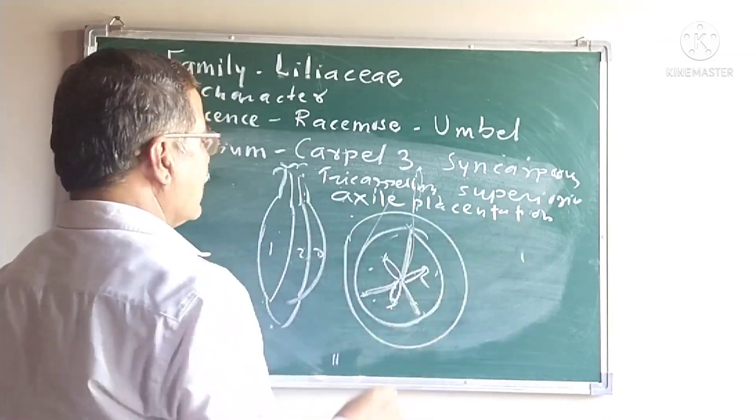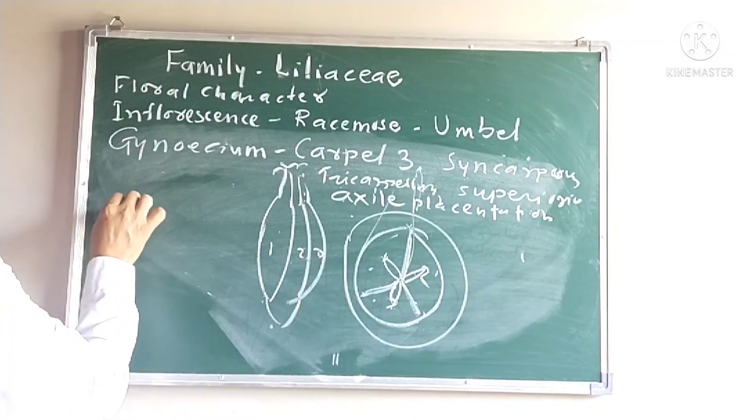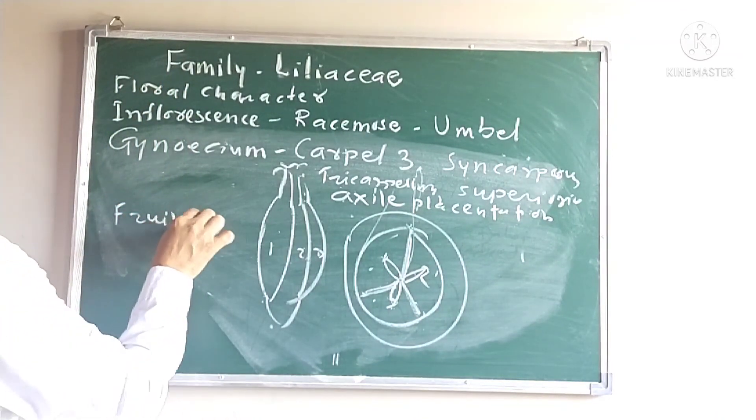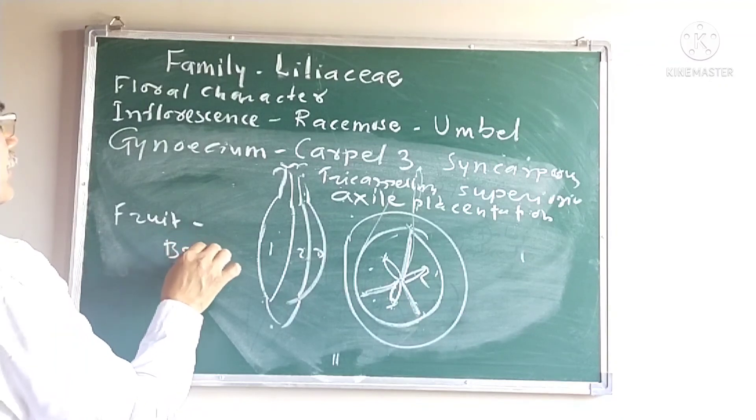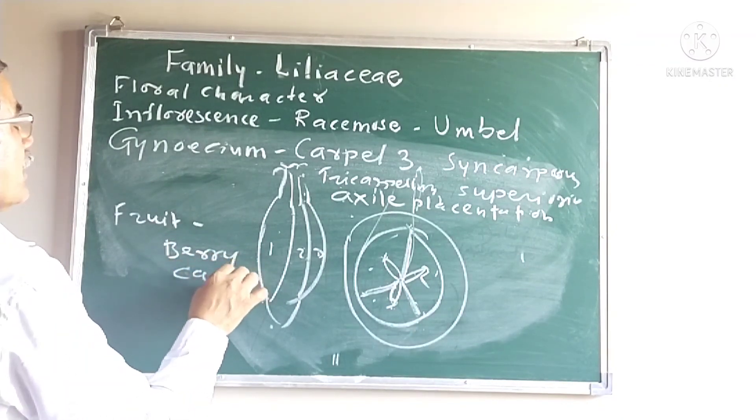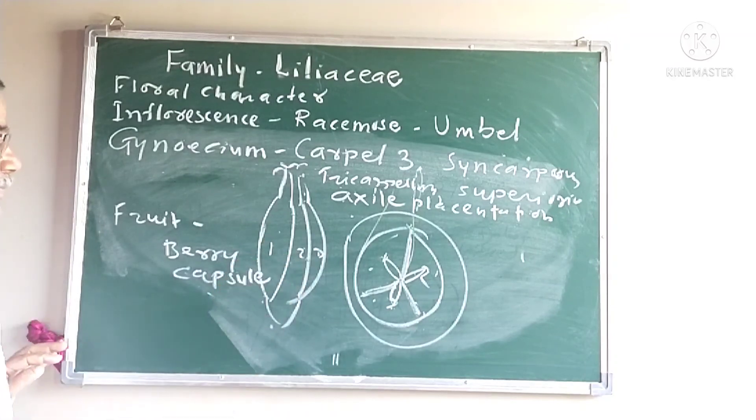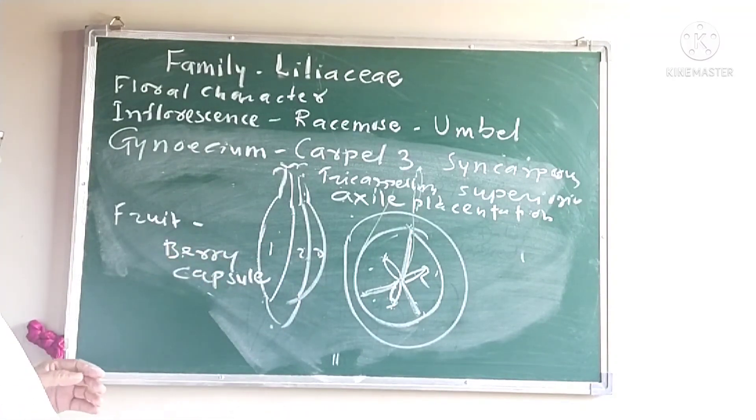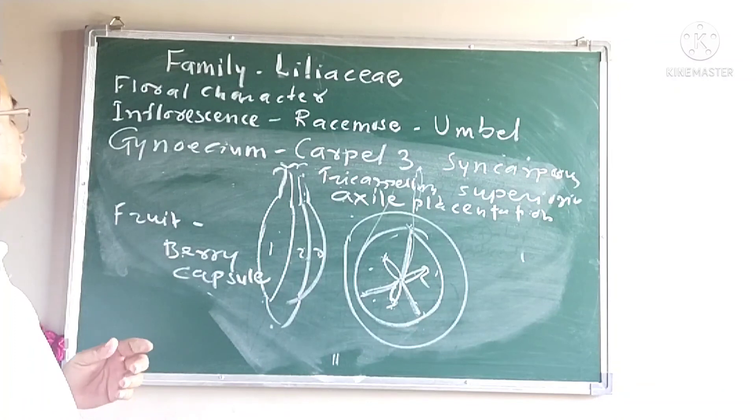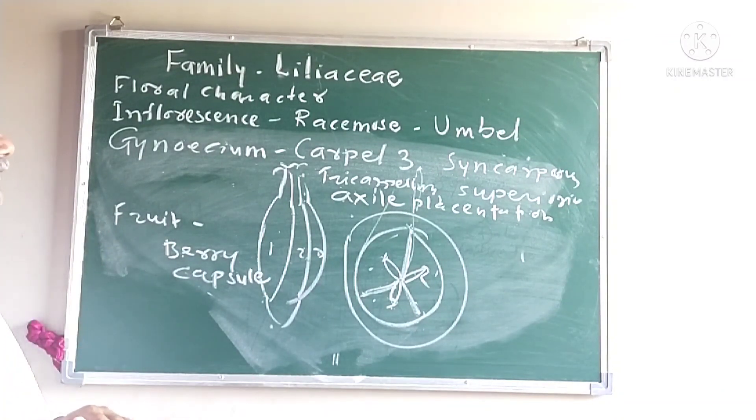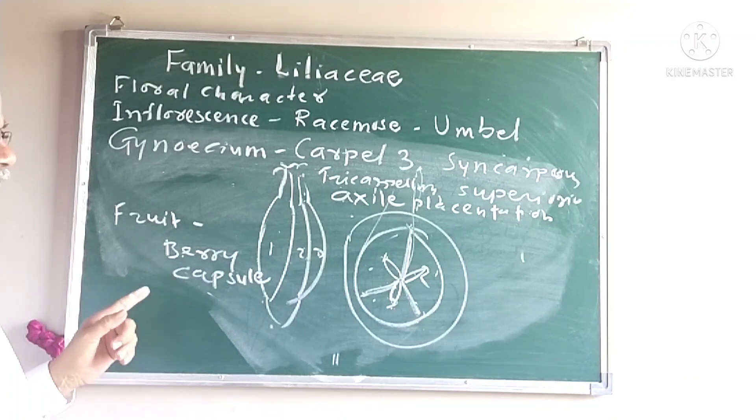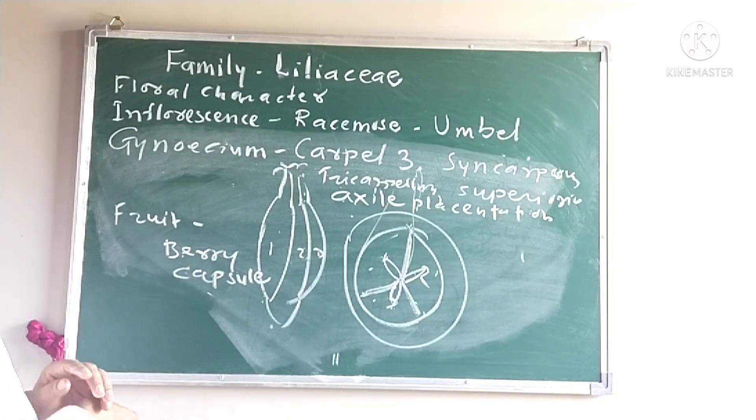The fruit is known as a berry or capsule. Fruits are berry or capsule. That is, the fruits are formed from a single carpel, many-celled, simple fruits. Capsule is a simple dry dehiscent fruit. Berry is a simple fleshy indehiscent fruit. These are the important characteristics.